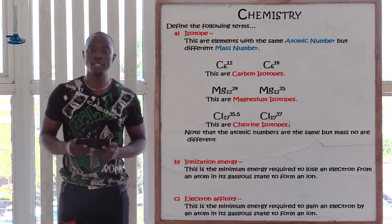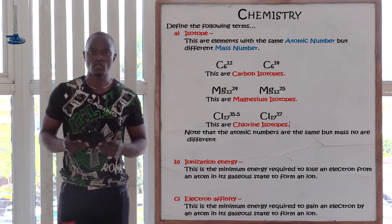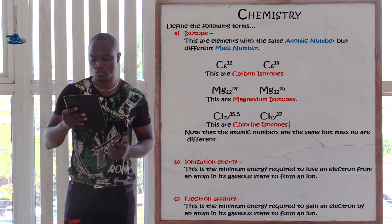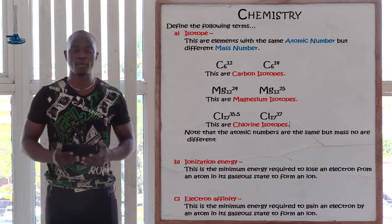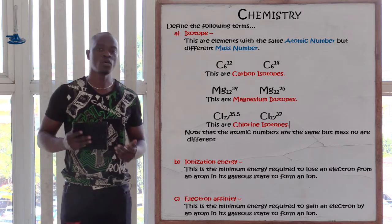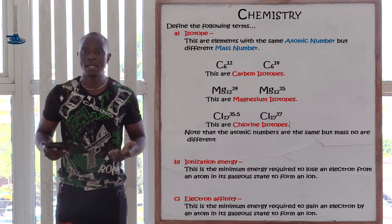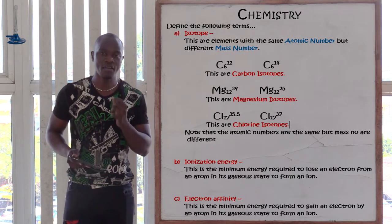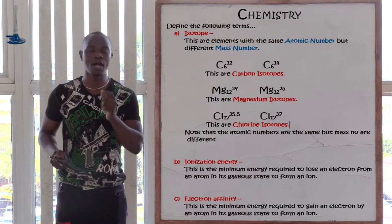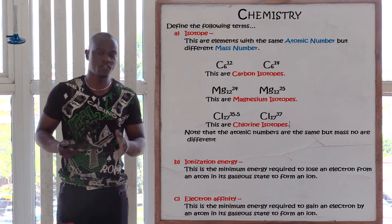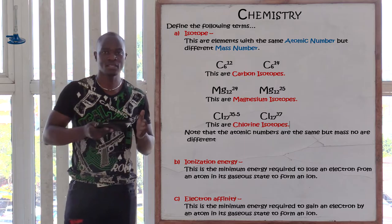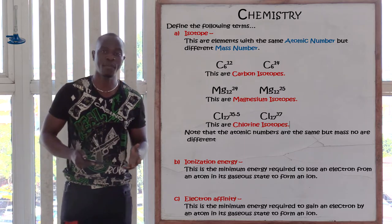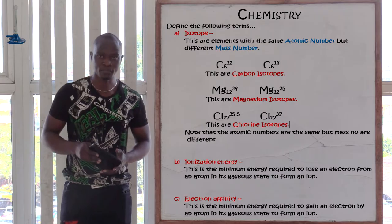Question number four is asking us to define the following terms. The first term is isotope. An isotope refers to elements or atoms having the same atomic number but different mass number.